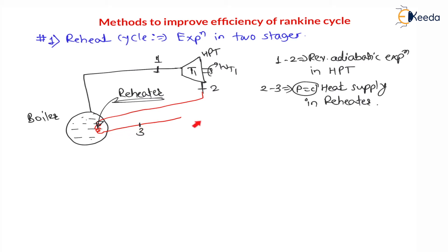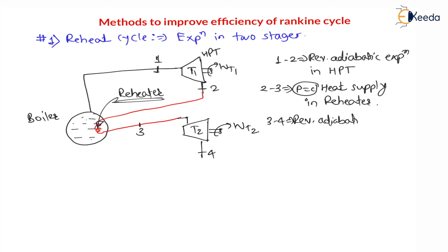After reheating, this steam is given to the low pressure turbine. There will be expansion in another turbine — turbine 2 — where this turbine produces work of turbine 2, expanding from 3 to 4. So 3 to 4 is reversible adiabatic expansion in the low pressure turbine, operating at lesser pressure. Here P2 equals P3, and P1 is greater than P2, because during expansion pressure drops from P1 to P2.